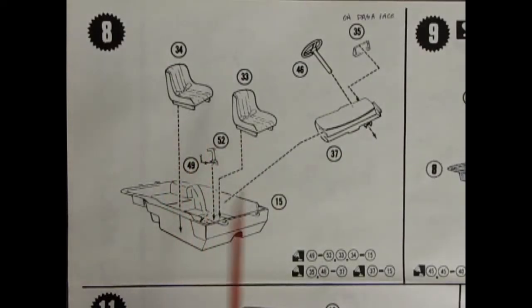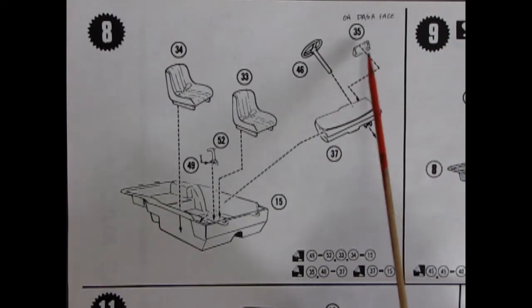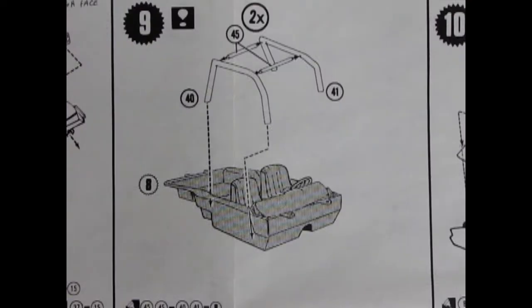Panel 8 is showing our two bucket seats going into the interior with our lockable shift lever and then a dashboard and the instrument face and our steering wheel. Our race ready interior assembly continues in panel 9 with the inclusion of our roll cage.